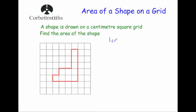Each square has an area of one centimeter squared, so we're just going to count up the squares. It's got one, two, three, four, five, six, seven, eight, nine, ten squares inside of it, so it's going to have an area of 10 centimeters squared.